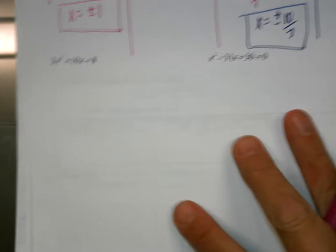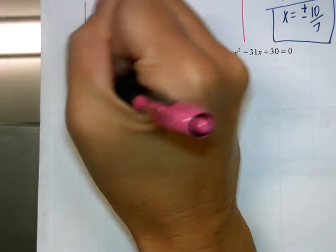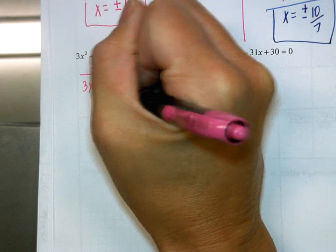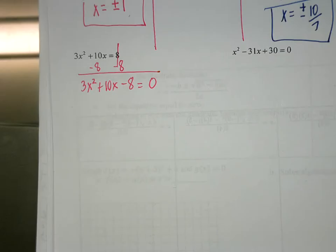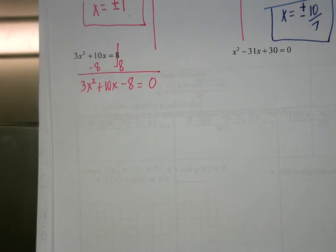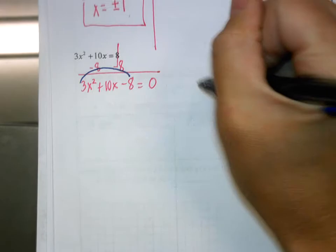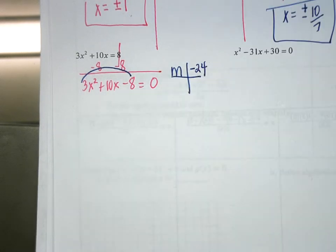What do I need to do first in this next example? Subtract 8. So: 3x squared plus 10x minus 8 equals 0. We have three terms — how do I factor this? We're going to end up going through grouping, but I need four terms in order to group. What will I do first? Multiply: 3 times negative 8 is negative 24. My multiplication number is negative 24, and my adding term is 10.